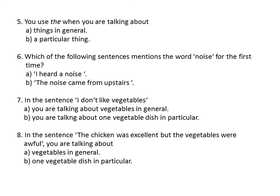Question 7: In the sentence 'I don't like vegetables' — A: you are talking about vegetables in general, or B: you are talking about one vegetable dish in particular. When I say 'I don't like vegetables', I'm talking about vegetables in general. So A is the correct answer.